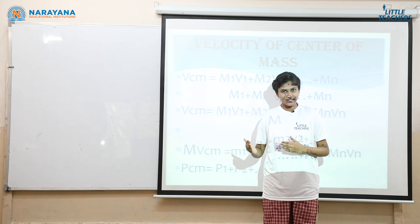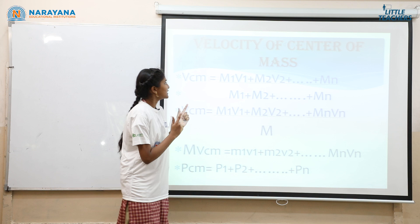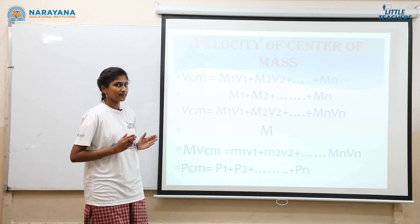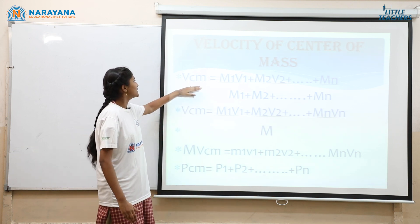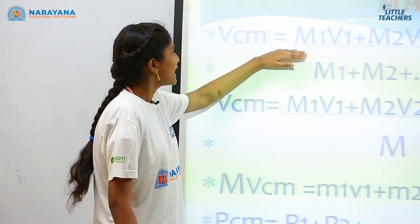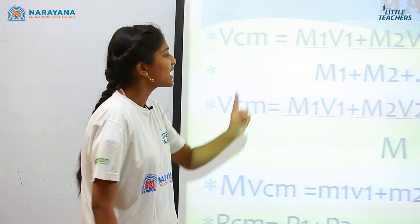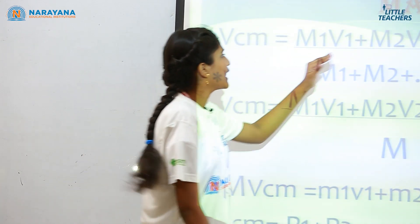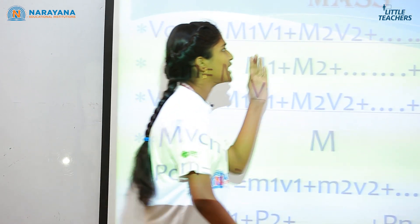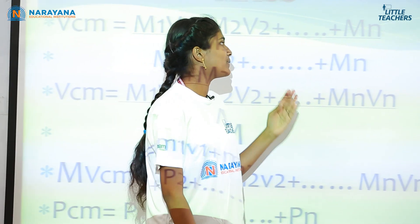Are the velocities the same? No, but my mass is constant. In the same way, every object's mass is constant but not the velocity. The equation to find the velocity of centre of mass is m1v1 — that is, the mass of the first object and velocity of the first object — plus m2v2, mass of the second object and velocity of the second object, and so on for n number of masses and n number of particles.